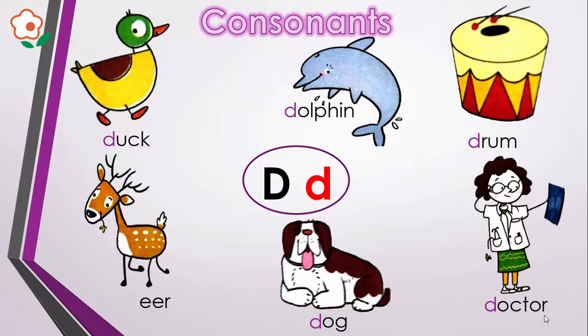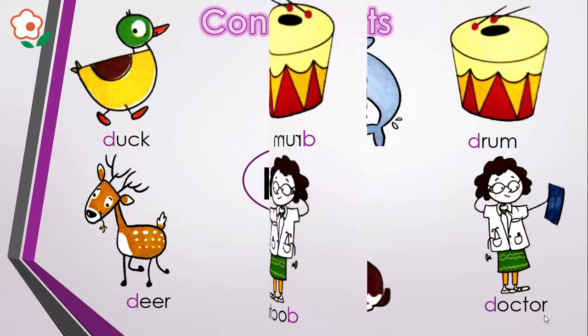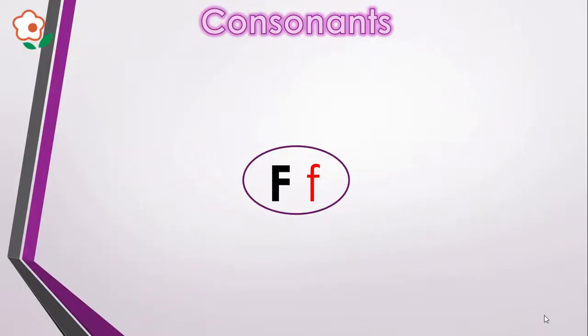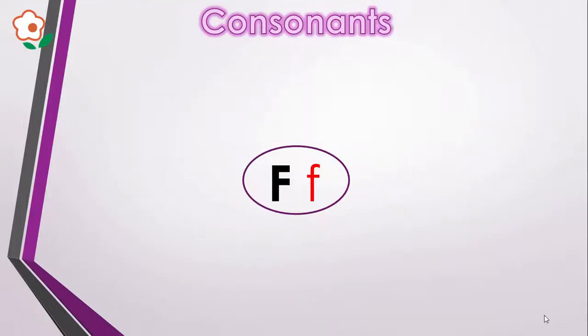And here we have our deer. Listen carefully. Deer is also beginning with D. Next letter we have is F. F is the name of the letter and its sound is F.